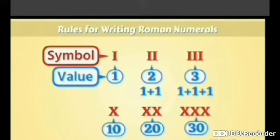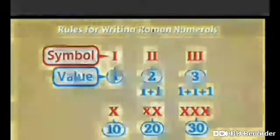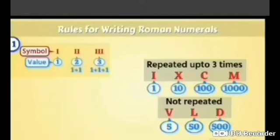Similarly, for 10 we write X. For 20, we write 2 X. And for 30, we write 3 X. The second rule says that the symbols for 1, 10, 100 and 1000 can be repeated up to 3 times only. But the symbols for 5, 50 and 500 cannot be repeated.